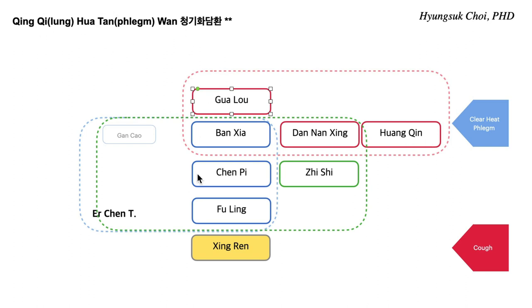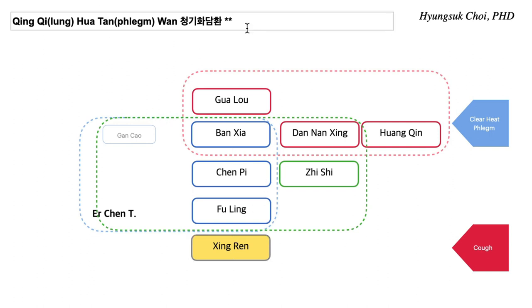That is Qing Qi Hua Tan Wan. Xing Ren looks like a cough suppressant, like Ji Ke. Qing Qi Hua Tan Wan is Tao Tan Tang with Xing Ren, Huang Qin, and Gu Lu. I would say Qing Qi Hua Tan Wan is the cooling version of Er Chen Tang — a cooling Er Chen Tang with cooling property.